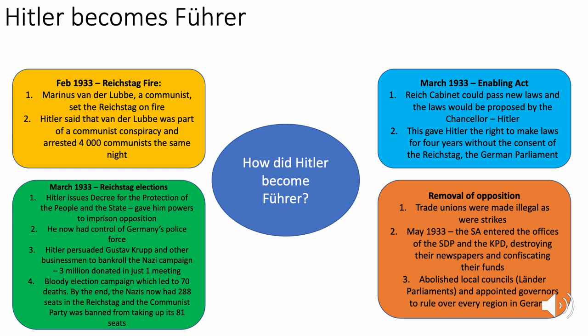Shortly after, in March 1933, Hitler passed the Enabling Act, which allowed his cabinet to pass new laws proposed by the chancellor without the consent of parliament for four years — giving him almost unlimited power. During the Reichstag elections that same month, he issued the Decree for the Protection of the People and State, allowing him to imprison opponents and giving him control of Germany's police force. He also got industrialist Gustav Krupp on side and, despite a violent election campaign, increased his seats to 288.